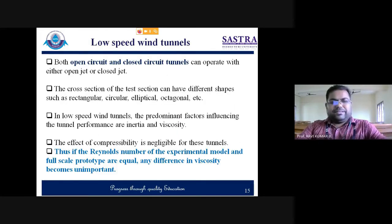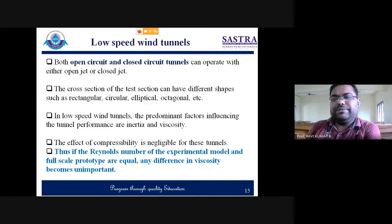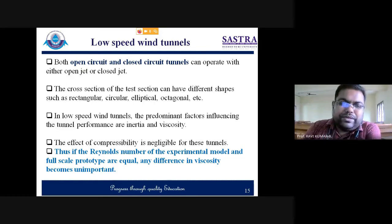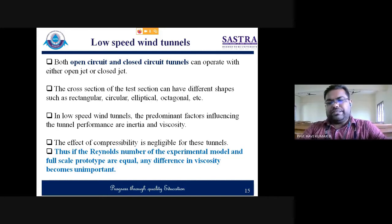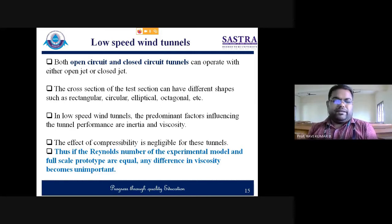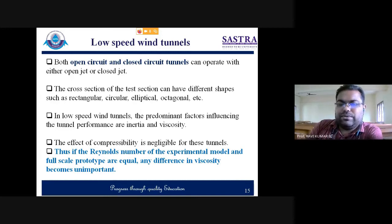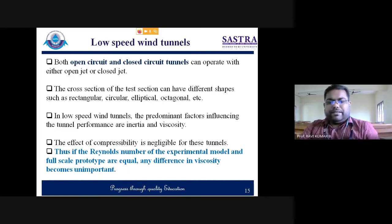Both open circuit and closed circuit wind tunnels can operate with either open or closed test sections, and the test section cross section may be cylindrical, rectangular, elliptical, or octagonal — any shape can be adapted. In low speed tunnels, the predominant factors are inertia and viscosity. Even though viscosity is neglected in theoretical analysis, it must be considered in real flow simulation. In low speed flow, viscosity plays a dominant role in calculating aerodynamic forces. The effect of compressibility is usually neglected because at low speed there is no appreciable change in density.